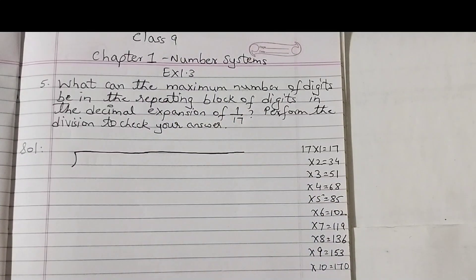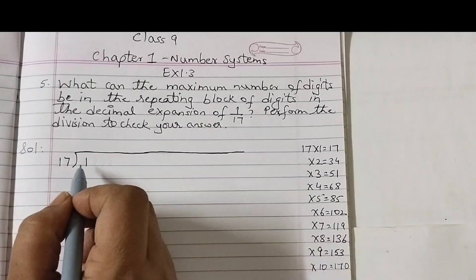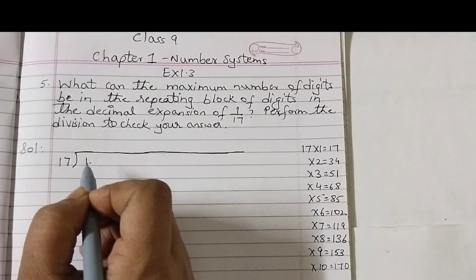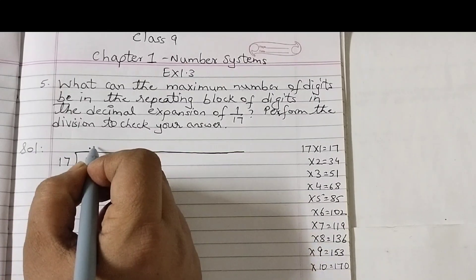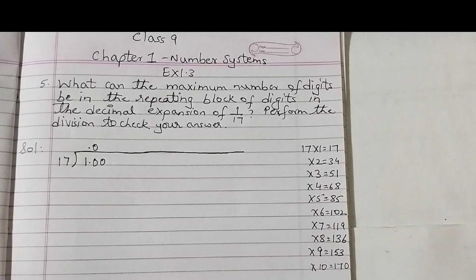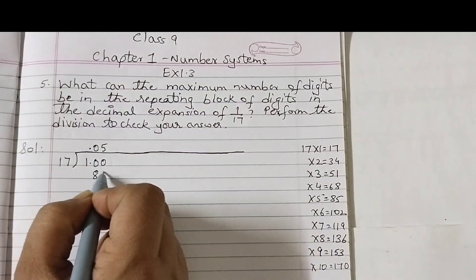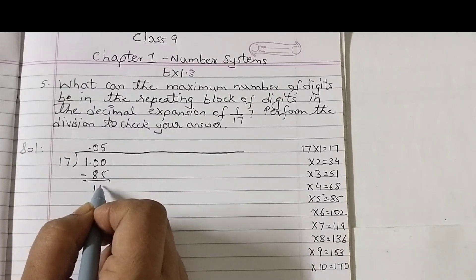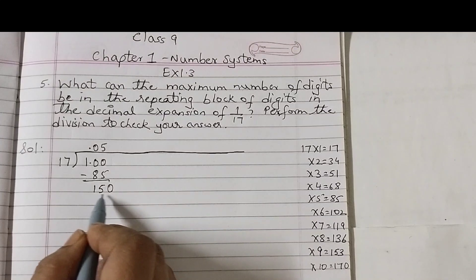That means that block will repeat itself. So 1 goes inside, 17 is outside. 1 is smaller so we will put a decimal point here as well. It becomes 10. 10 is still smaller than 17, so place a 0 here and then one more 0 — now we can divide. You may use a table of 17 when you are doing the division. So 17 into 5 is 85. 100 minus 85 is 15. Put a 0.